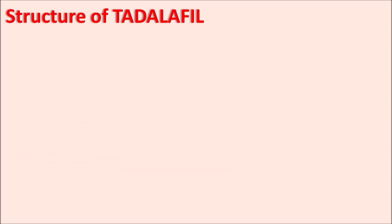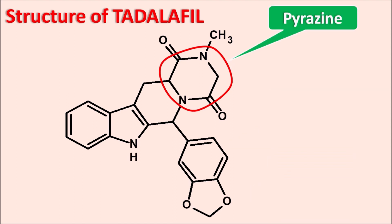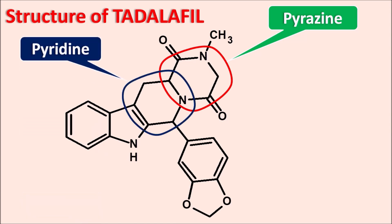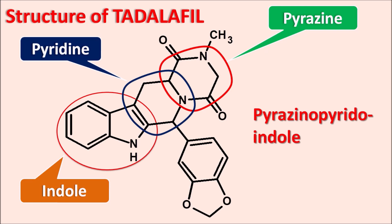Let us see the structure of Tadalafil. We can observe four rings are fused, and here we can find different types of heterocyclic ring systems. The first is a heterocyclic ring system with two nitrogens and six-membered — that is the pyrimidine ring system. The second one has a single nitrogen, so this is the pyridine ring system. And finally we can observe another heterocyclic ring system — this is simply indole. So Tadalafil is a fused ring system of these three heterocyclic ring systems.